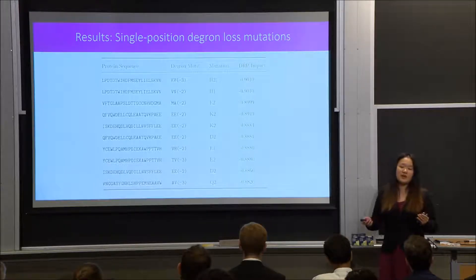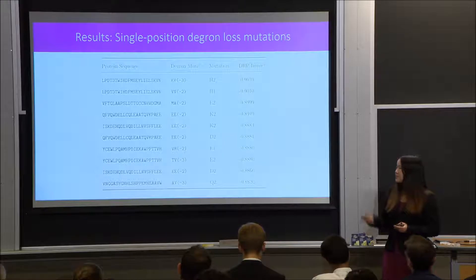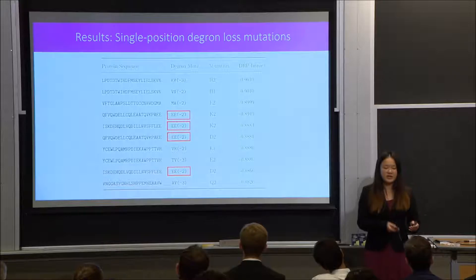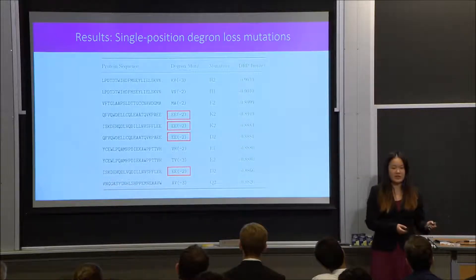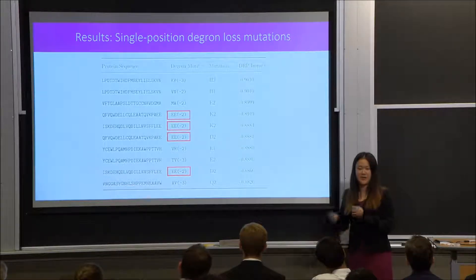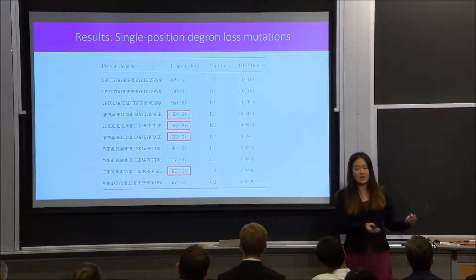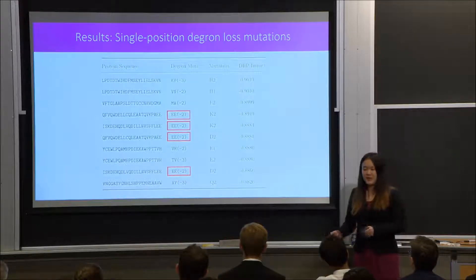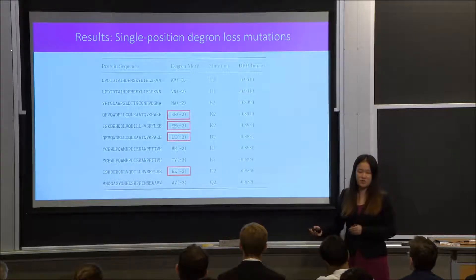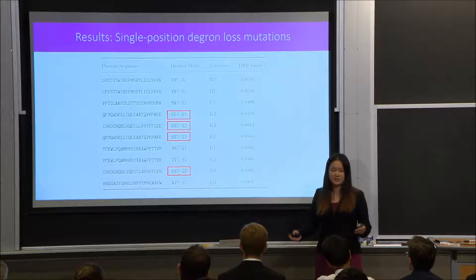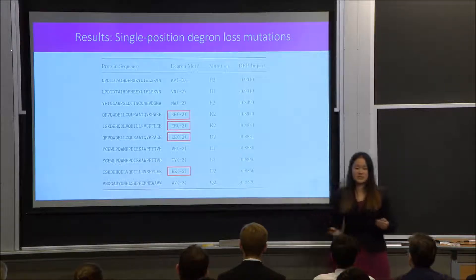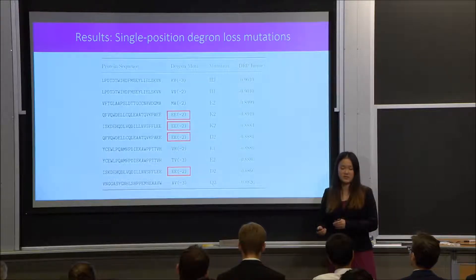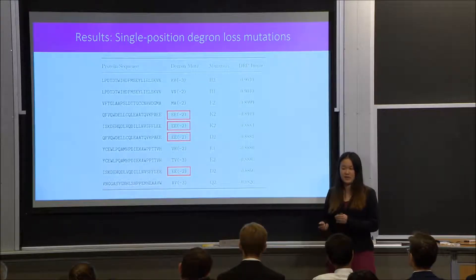We observed an interesting pattern among these top 10 mutations: four out of the top 10 belong to the EE-2 motif. In our first objective, the EE-2 motif was the second most significant motif identified by our computational pipeline, and in previous wet lab analyses it was also identified as a potential degron motif. The prevalence of the EE-2 motif across multiple computational and experimental analyses suggests that EE can be not only a significant degron motif, but also a target sequence particularly susceptible to cancer mutations.